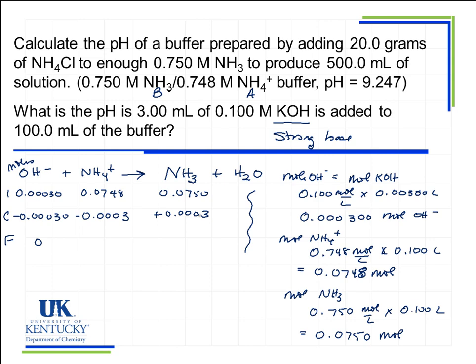That is going to give us in the F line under ammonium, 0.0745, and for ammonia NH3, 0.0753. At this point, we have a buffer, so we can determine the pH of the buffer.